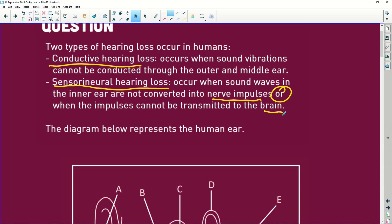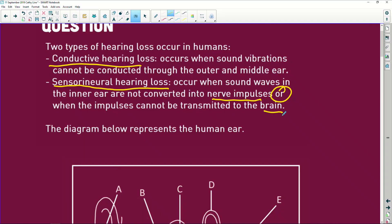So there are two issues here. One is that it's not being converted into an impulse, which means that cochlea is not doing its job. Or that auditory nerve is not functioning properly. Then it can't get to the brain because the brain has to interpret all of this in the cerebrum. Okay, so the diagram represents the human ear.